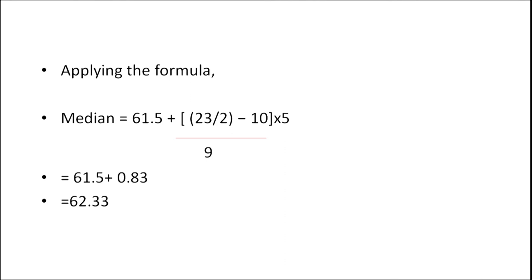Applying the formula: Median = 61.5 + [(23/2 − 10) / 9] × 5 = 61.5 + 0.83 = 62.33.